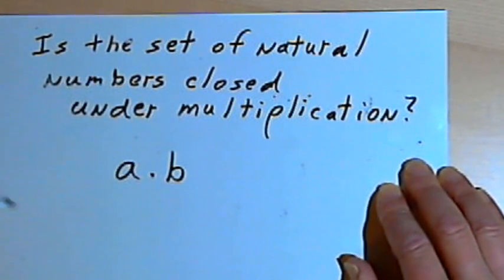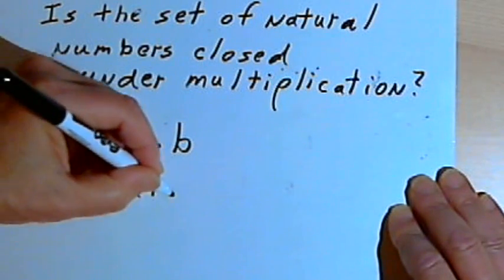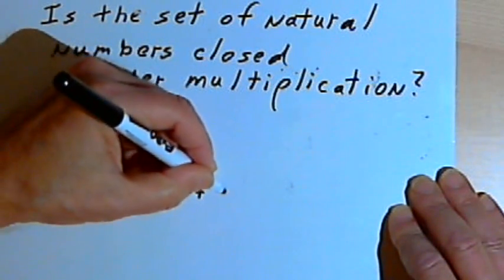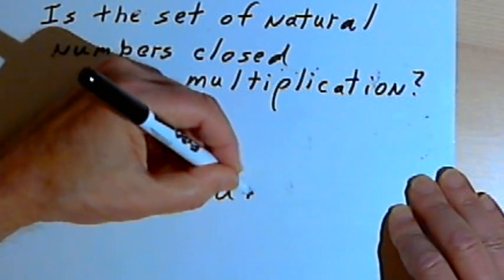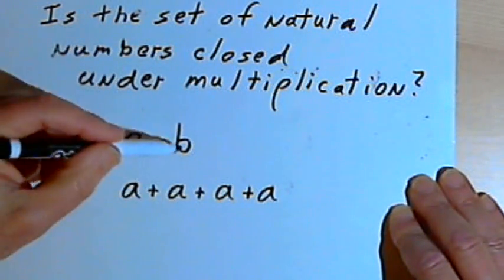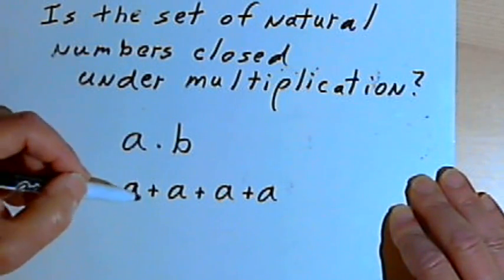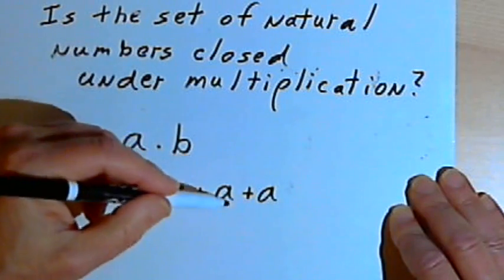and I multiply them, really what I'm doing is I'm adding repeatedly a number of A's. The number of A's I'm going to add is B, whatever B is. But B is a natural number, so I know I'm adding whole amounts of A.